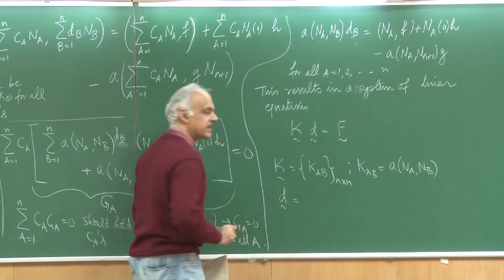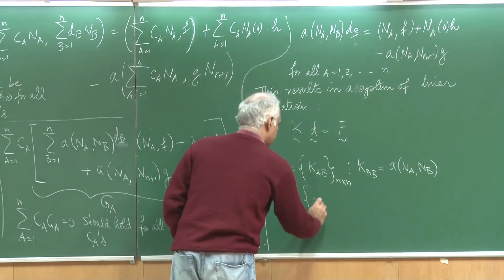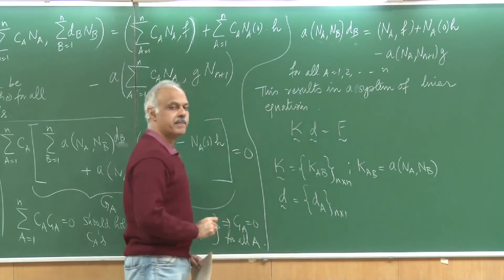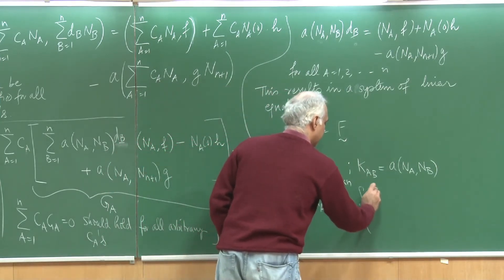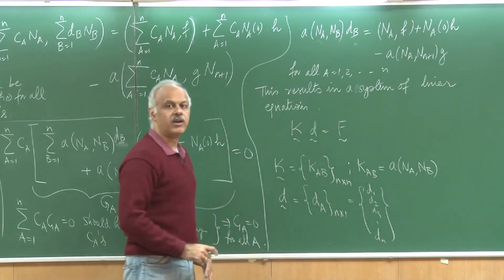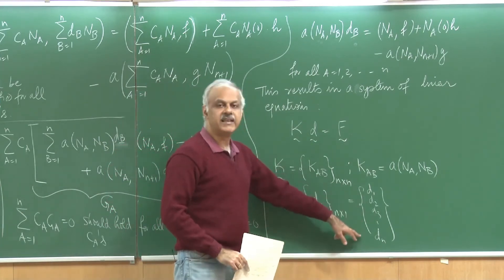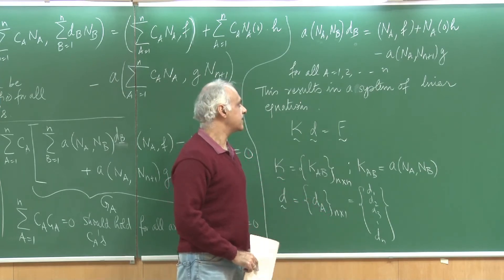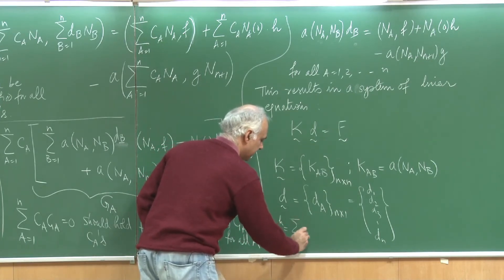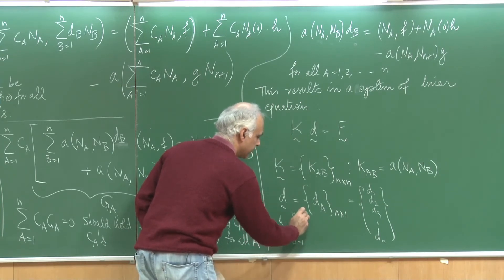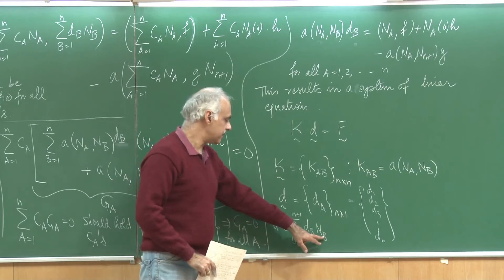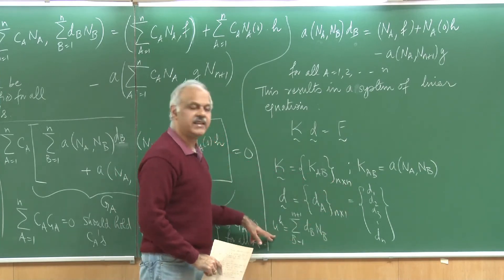d is the vector of unknowns, this is n cross 1. The vector d looks something like this: d_1, d_2, d_3 all the way to d_n. This is the vector of all unknowns. If I know all the d_a's, if I can find them out, I can reconstruct my solution because if you remember my u_h is given as summation b goes from 1 to n+1 d_b n_b. n_b's are the functions that are given to me, d_b's I can calculate and then I can estimate what is u_h.